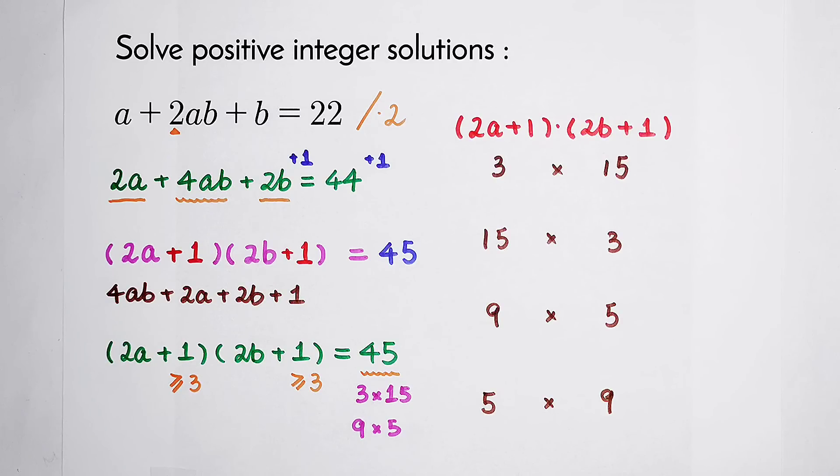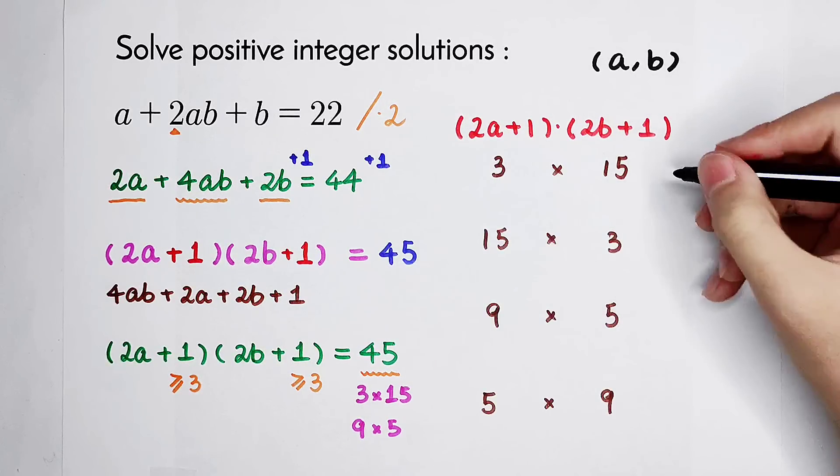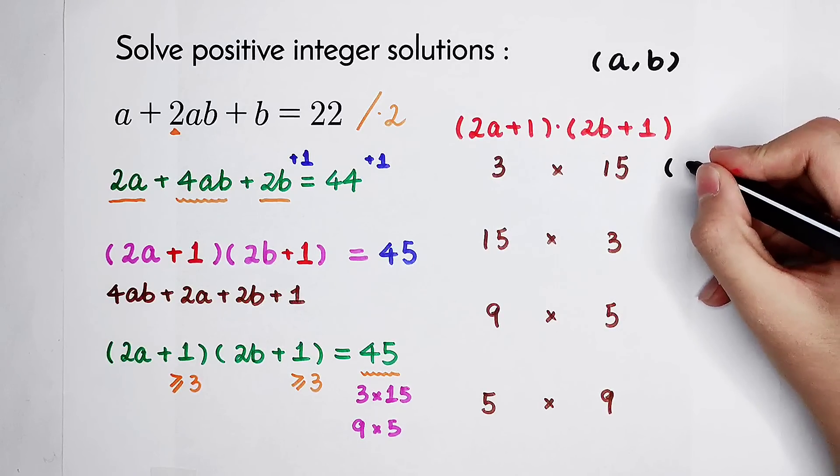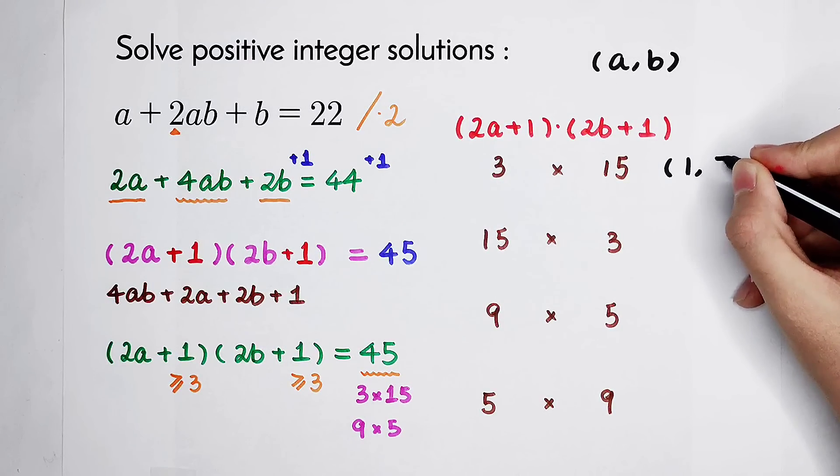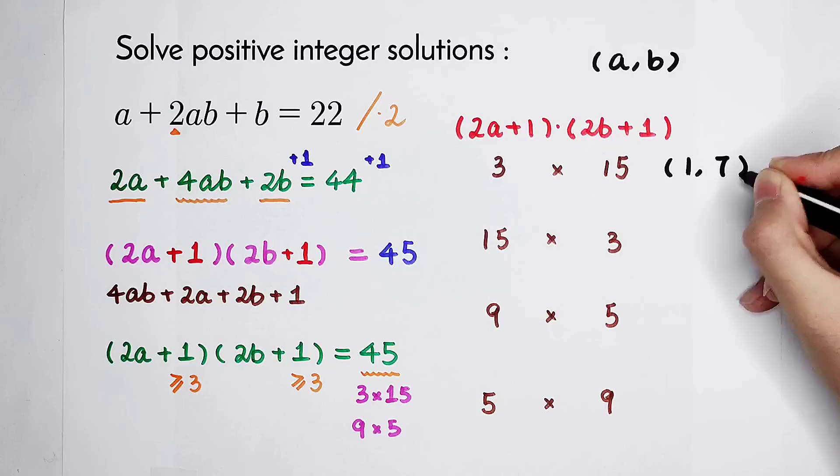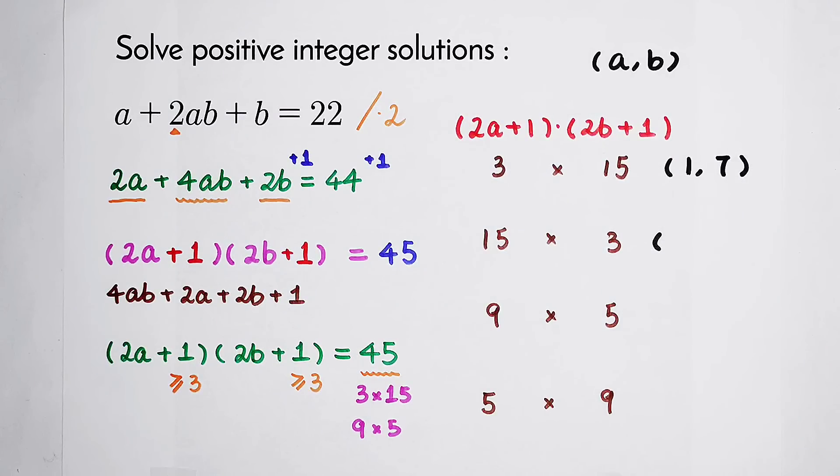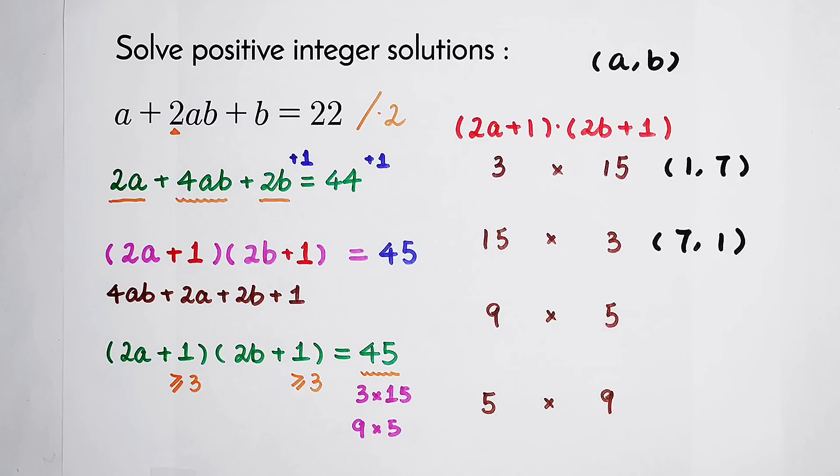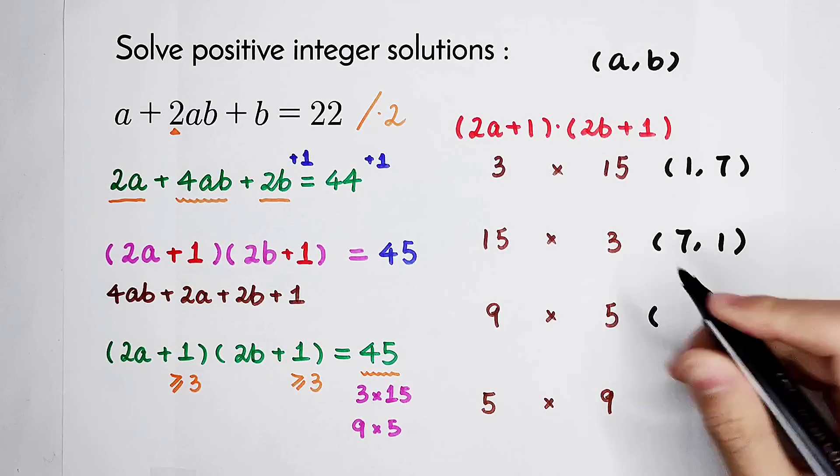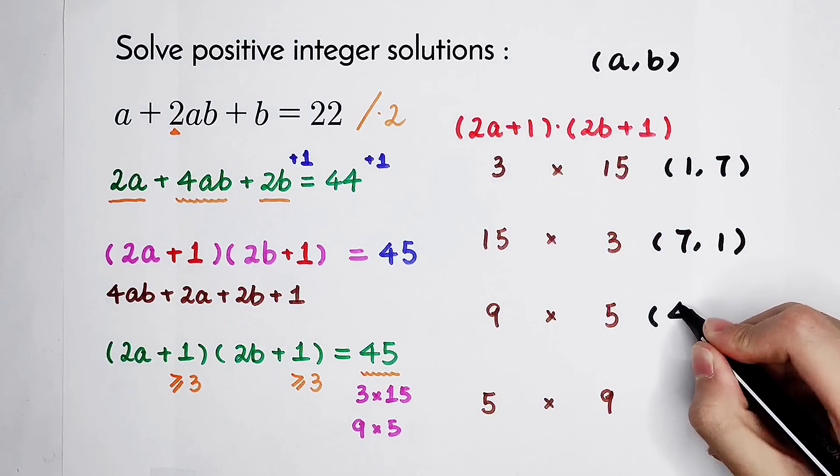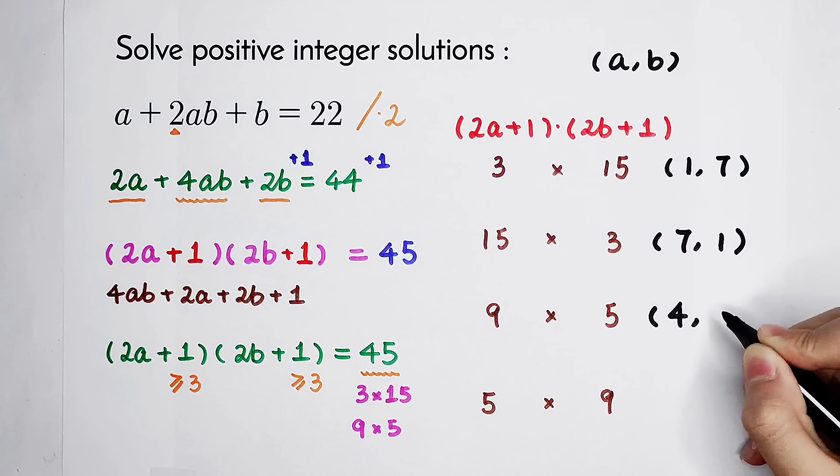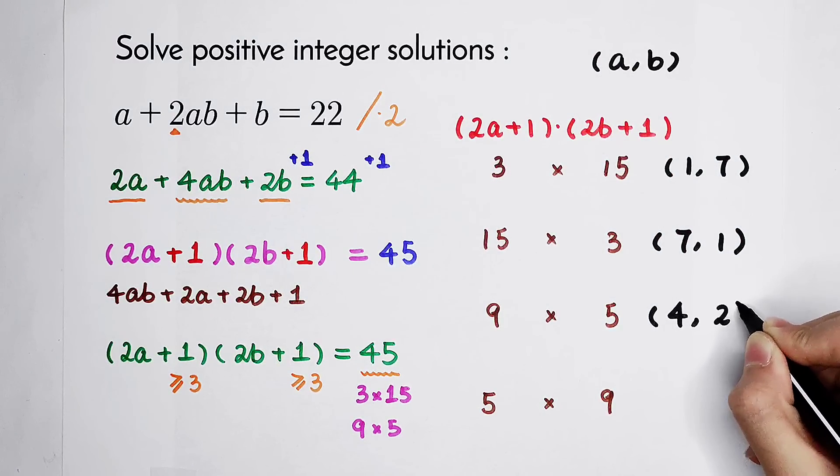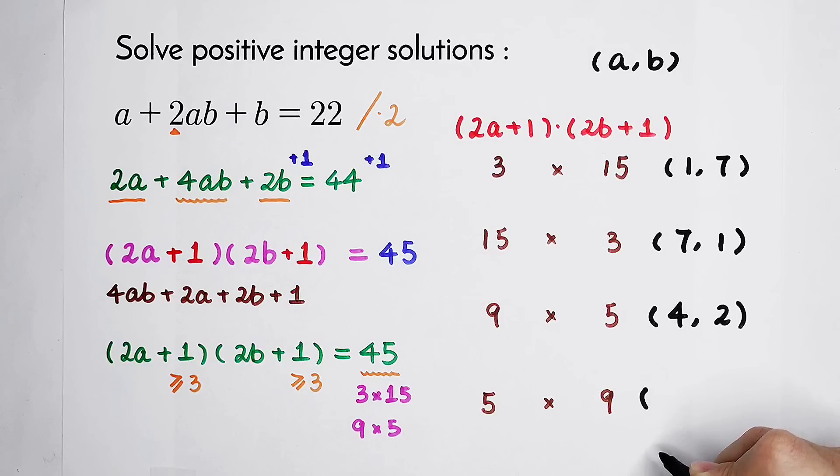And we have to solve the value of a and b. Then, in this case, a is equal to 1 and b is 7. In this case, a is 7, b is 1. In this case, 2a is 8, so a is 4 and b is 2. In the last case, a is 2 and b is 4.